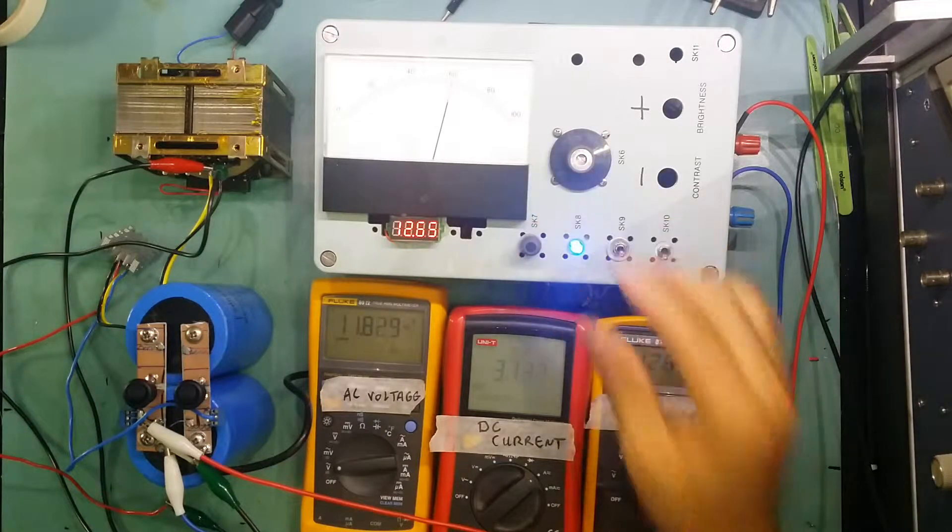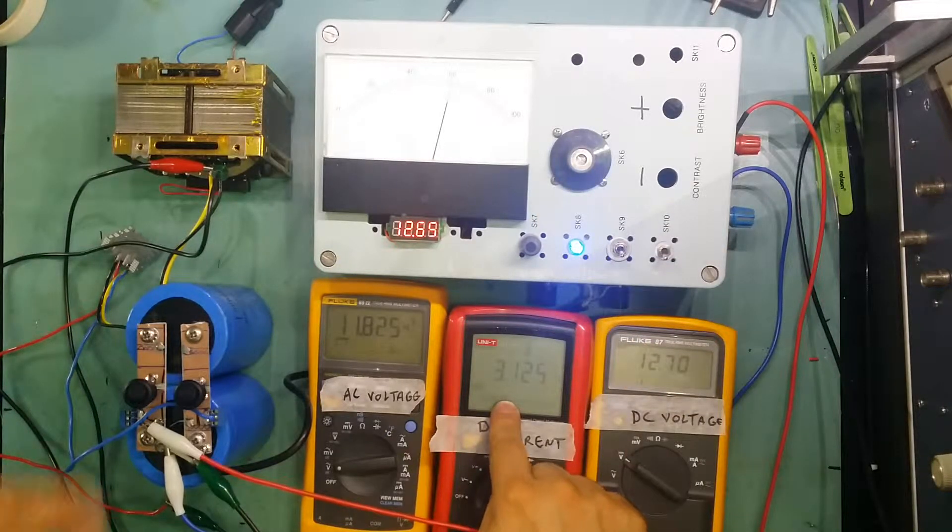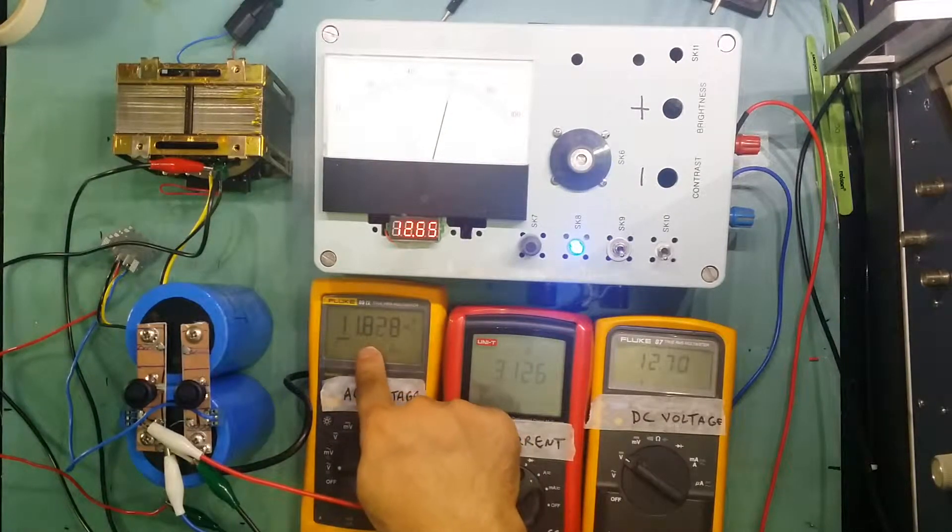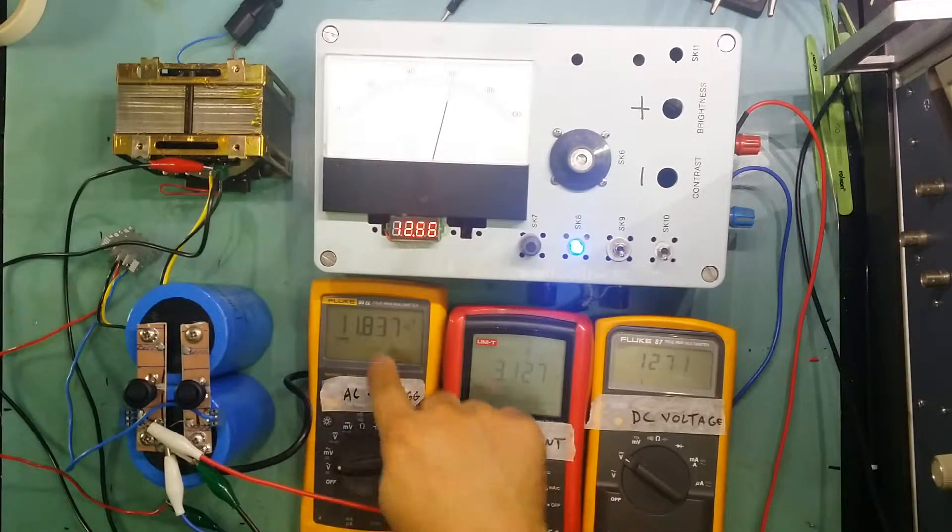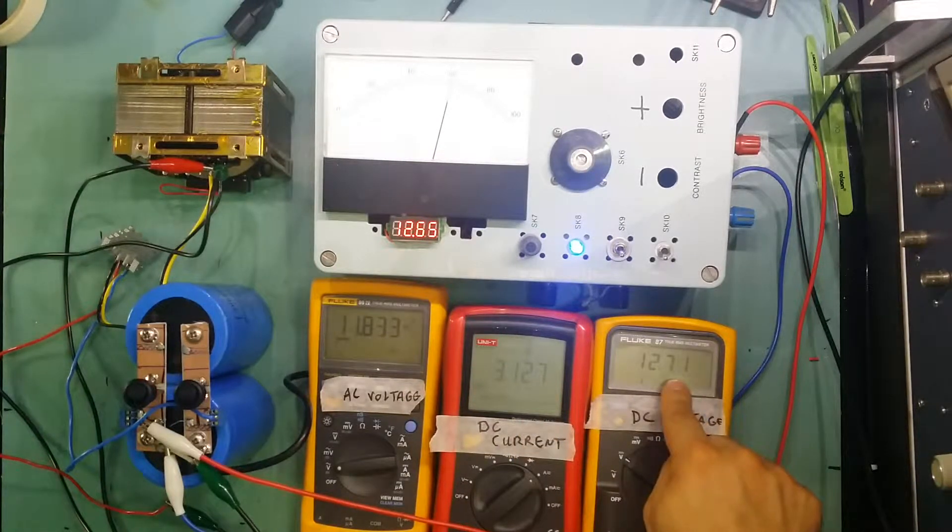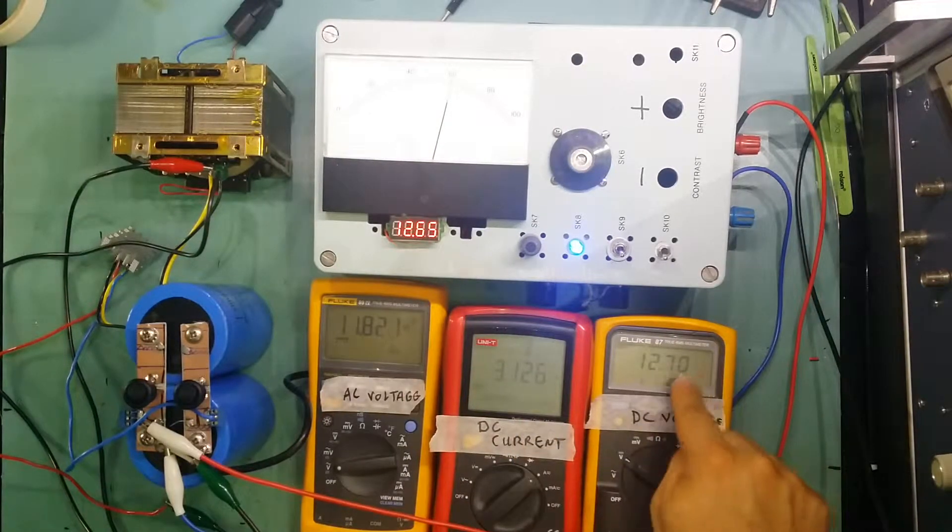We go to 3 amp. This is 3 amp. The input voltage from 12.2 to 11.8, so that's 400 millivolt of AC drop. Current is 3.1, and the DC side from 15.5 to 12.7.